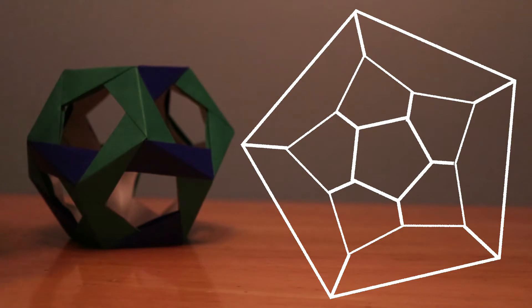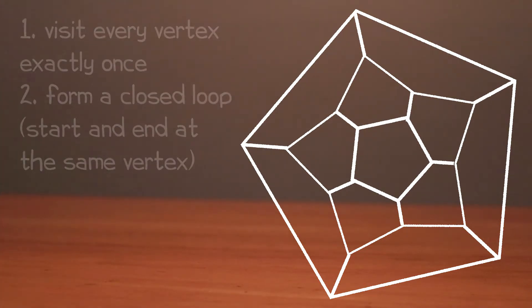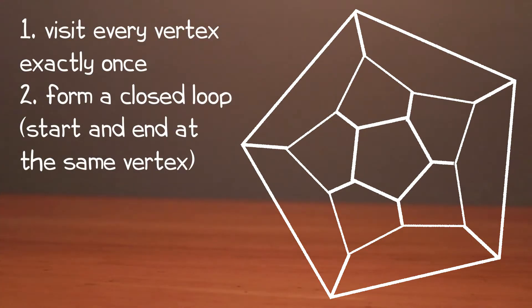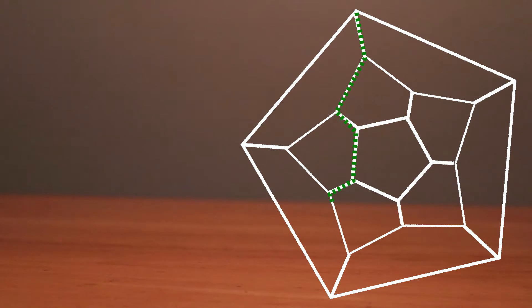A fun puzzle is to try and find a path along this graph so that you visit every vertex exactly once, and you start and end at the same vertex. Such a path is called a Hamiltonian circuit.